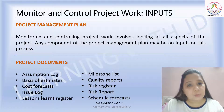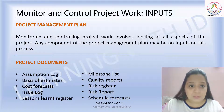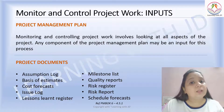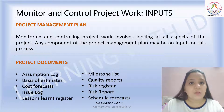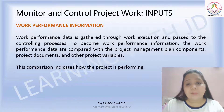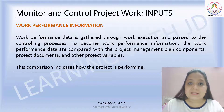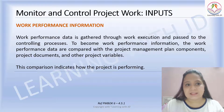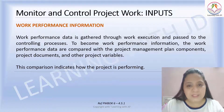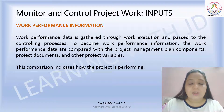The project management plan includes all the subsidiary management plans, all the baselines, and other components such as the change management system and configuration management system. You also need your project documents — assumption logs, basis of estimate, milestone list, quality reports, and schedule forecast. Then you need work performance information. Work performance data is collected through the work execution section and passed on to the controlling processes — when that data is passed on, it is known as work performance information.